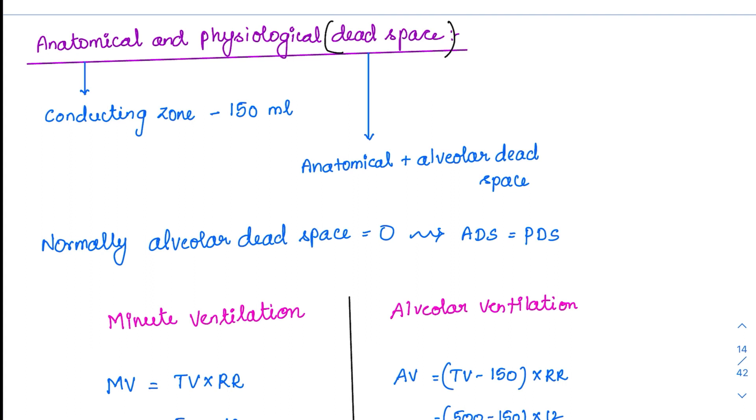Already we have seen in the beginning of the functional anatomy of respiratory system, some parts are just conducting the air, not doing any exchange. It is called the conducting zone and its normal value is 150 ml. 150 ml of air, whichever we are breathing in the tidal volume. Tidal volume's normal value is 500 ml. Out of this, only 150 ml is there in the conducting zone and the rest, 350, only goes to the alveolar zone.